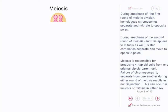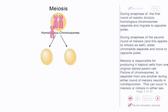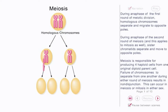During anaphase of the first round of meiotic division, homologous chromosomes separate and migrate to opposite poles. During anaphase of the second round of meiosis — and this applies to mitosis as well — sister chromatids separate and move to opposite poles.